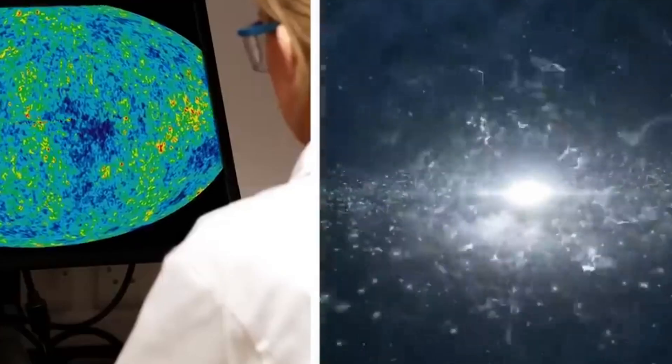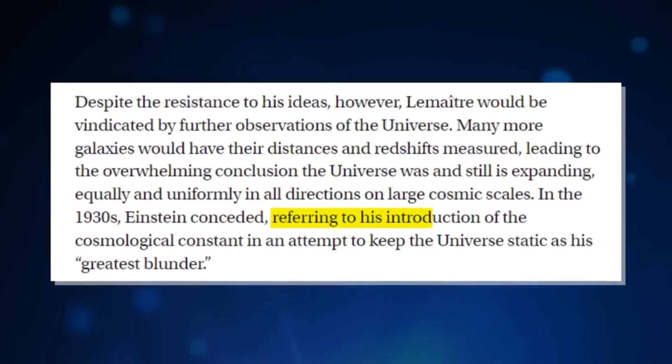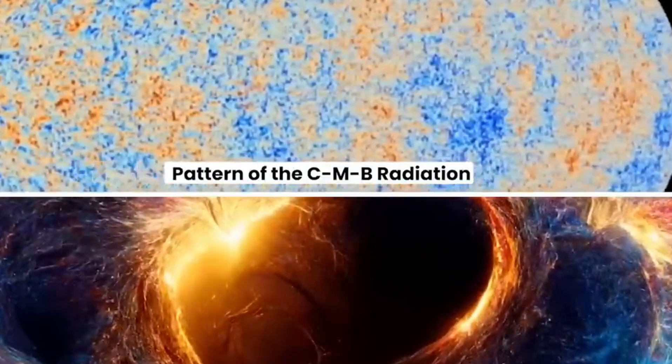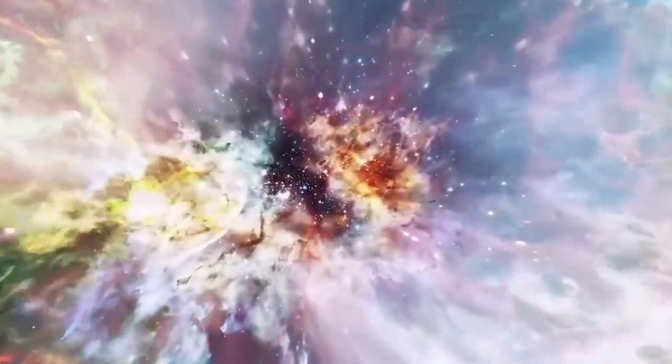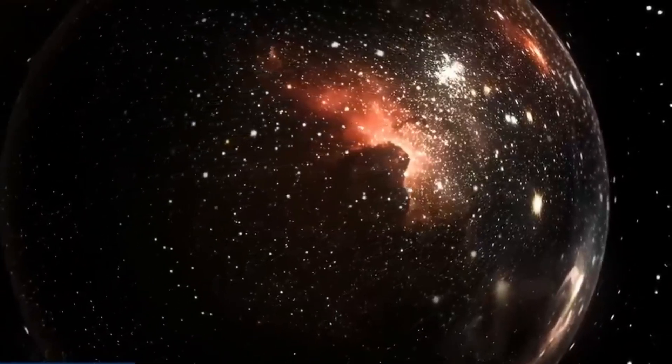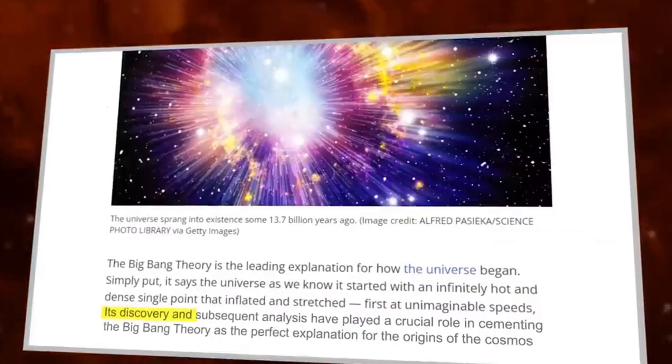The images that revealed these puzzling galaxies were obtained by Webb's near-infrared camera, or NIRCAM, as part of the Cosmic Evolution Early Release Science, CEERS, program. Astronomers plan to soon turn Webb's mirror to these galaxies again, this time to obtain light spectra from those distant dots. Spectra break down the observed light according to its wavelength composition and thus reveal the chemical and physical properties of its source.